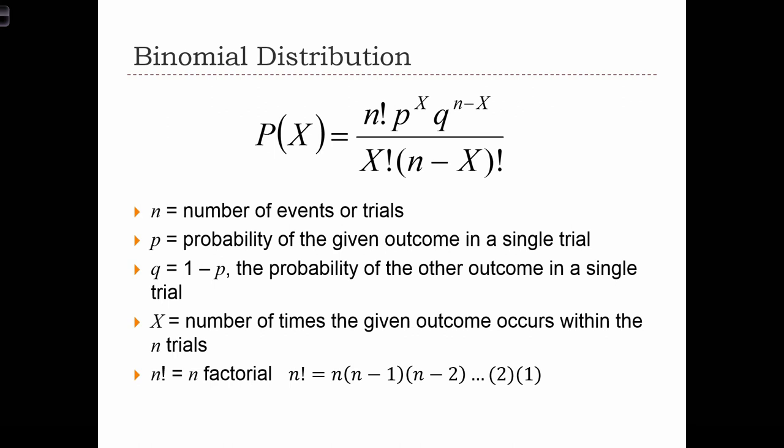The formula for the binomial distribution seems pretty complicated, but really, we're just plugging numbers into this equation and solving for the probability of X. In this case, X is the outcome that we're interested in, the number of times the given outcome occurs within the n trials.